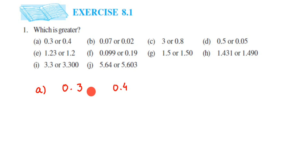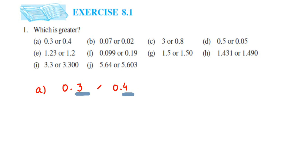Here the whole parts are both zeros, so we have to check the decimal part. In the decimal part, check the number in the extreme left — that is, the number in the tenth place, the immediate number after the decimal point. Here we have 3 and 4. Four is greater than three, which means 0.4 is greater than 0.3.